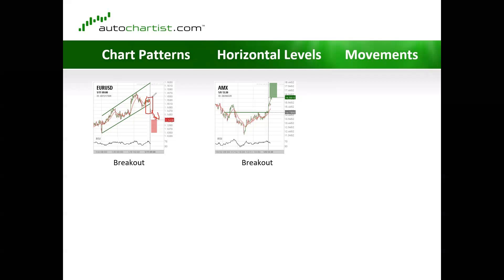This is what we call a breakout trading opportunity. The same thing can happen for horizontal patterns. Chart patterns are based on two things: a resistance level and a support level. Whereas horizontal patterns are based on only one thing — either support or resistance. In this case, this is the resistance level, and you can see that the price of AMX has consolidated here and here.